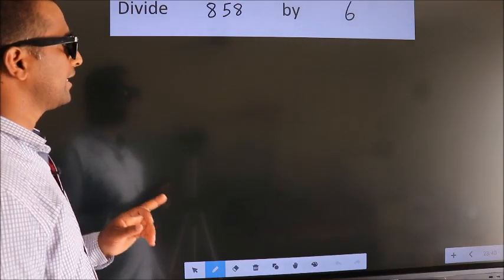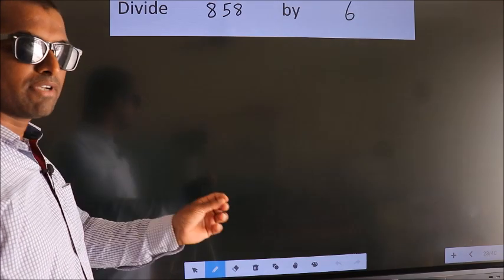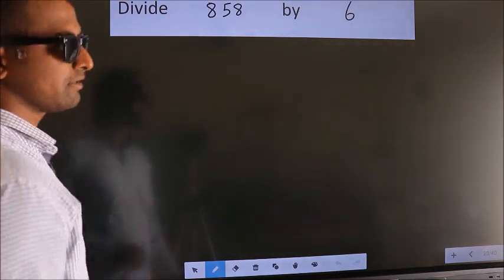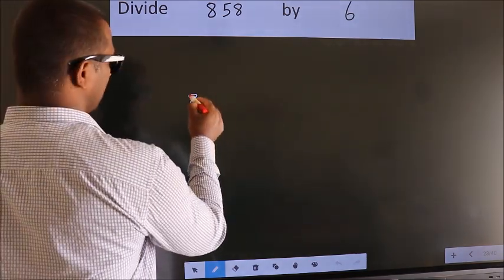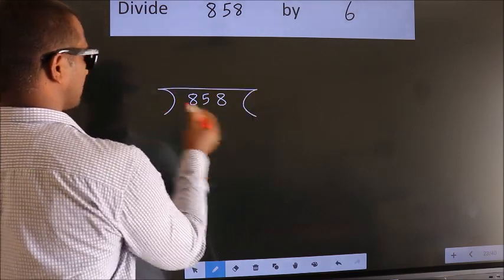Divide 858 by 6. To do this division, we should frame it in this way: 858 here, 6 here.